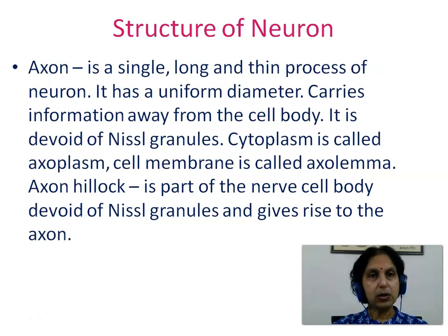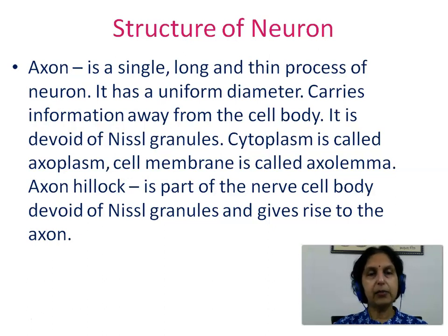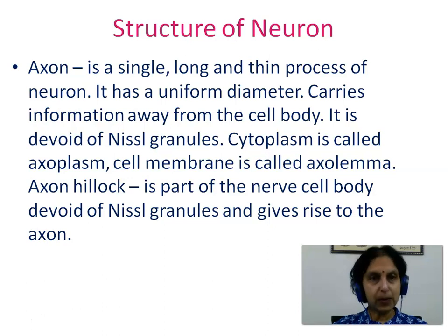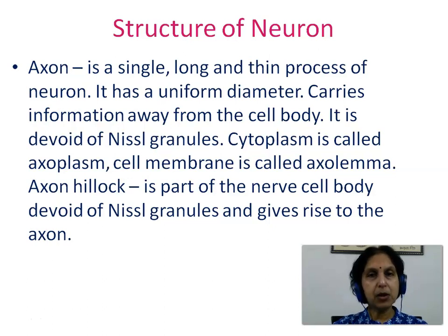The axon is a single long and thin process of the neuron. It has a uniform diameter and carries information away from the cell body. It is devoid of Nissl granules. The cytoplasm of the axon is called axoplasm and the cell membrane is called axolemma. The axon hillock is a part of the nerve cell body devoid of Nissl granules that gives rise to the axon.